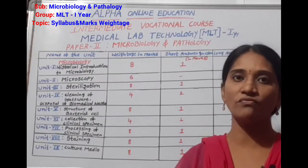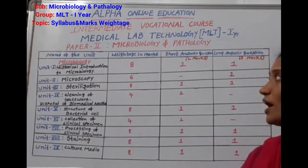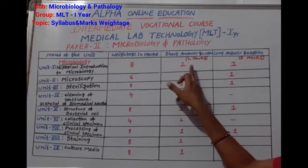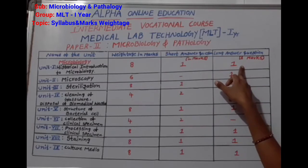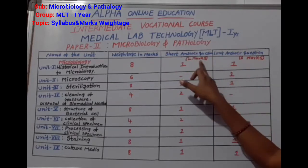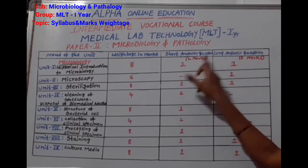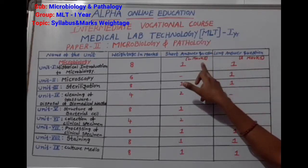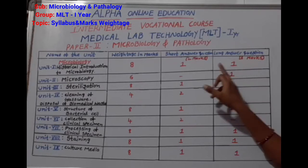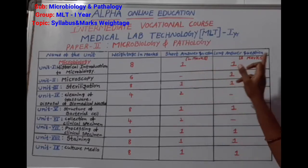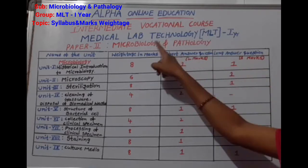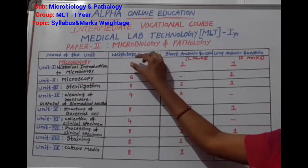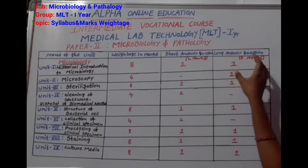Unit 1 is History of Microbiology. The total weightage for this unit includes short answer questions worth 2 marks and long answer questions worth 6 marks. This unit carries approximately 8 marks in total.